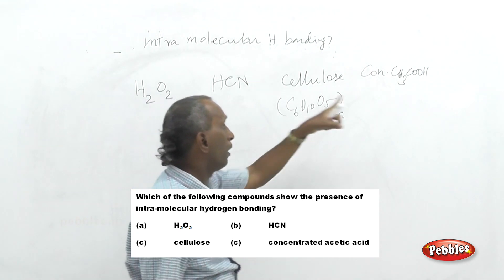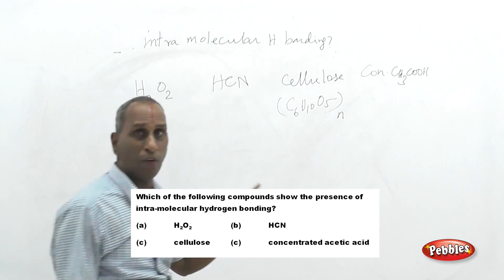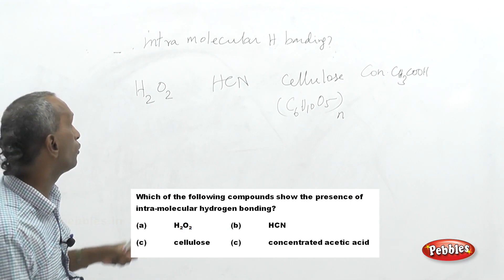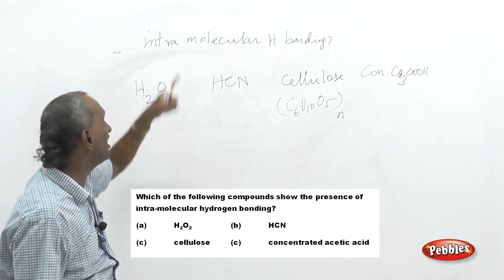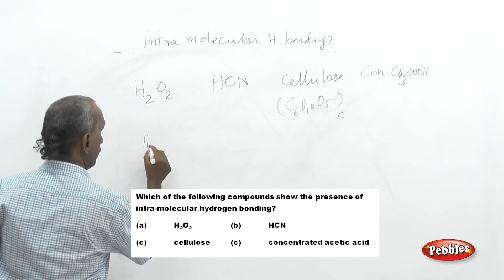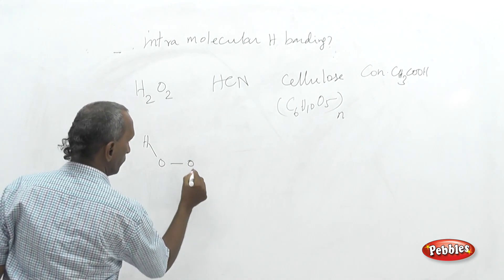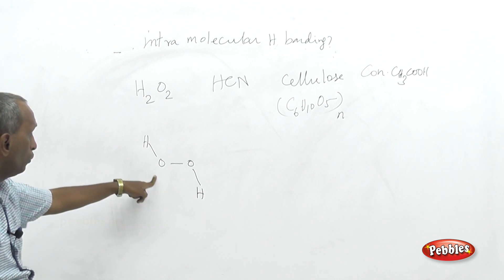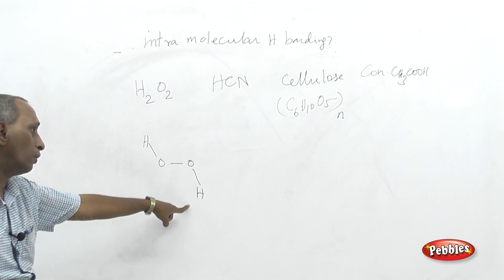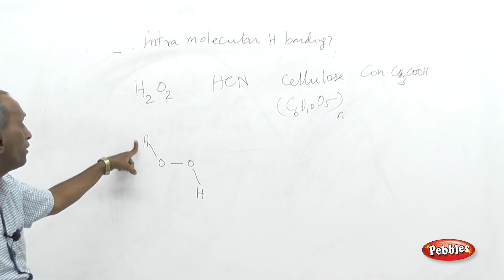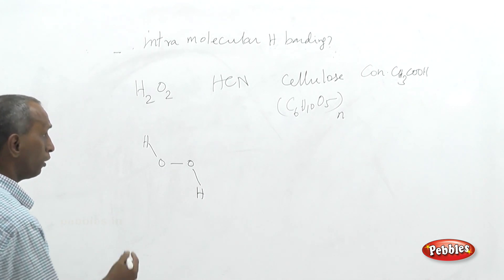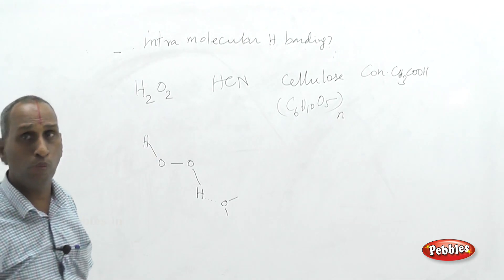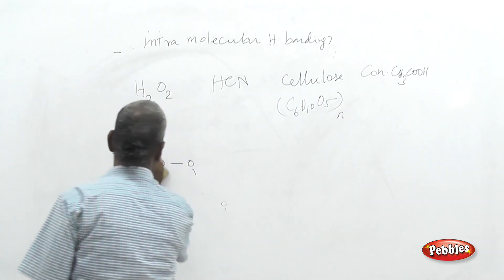Analyzing hydrogen peroxide (H₂O₂): two oxygen atoms, each with one hydrogen. If hydrogen bonding occurs here, it will be between two separate molecules — it is intermolecular hydrogen bonding. For hydrogen cyanide, it is a linear molecule H–C≡N. Here nitrogen is more electronegative, but due to the directional nature of bonding, nitrogen cannot attract hydrogen from the farthest position.